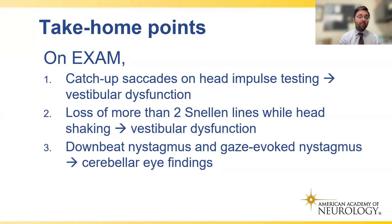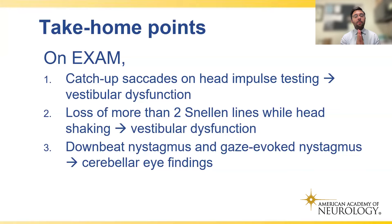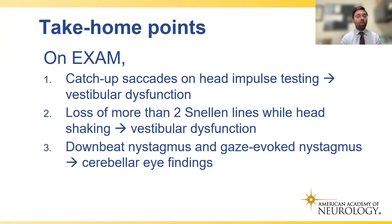On exam, the head impulse test is a very useful clinical skill — we're testing the high-frequency VOR. The patient fixates on an object like the examiner's nose, and the examiner rapidly rotates the head. When the peripheral vestibular system is working normally, the eyes stay on target. With peripheral vestibular loss, the eyes move off target and a corrective catch-up saccade is seen. Head shaking or dynamic visual acuity testing similarly reveals bilateral vestibular loss — patients may lose four or five lines on the Snellen chart rather than the normal maximum of two.